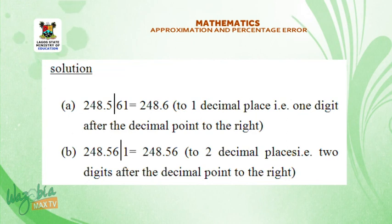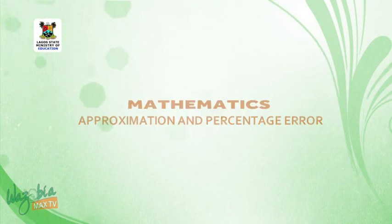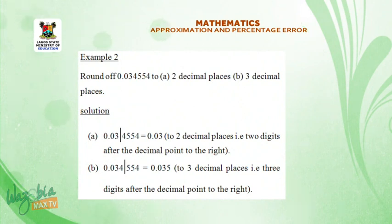Please don't go away. I will be right back. Welcome back. Example 2. Round off 0.034554 to a, 2 decimal places, b, 3 decimal places. Solution A, 0.034554 is equal to 0.03 to 2 decimal places. That is 2 digits after the decimal point to the right.